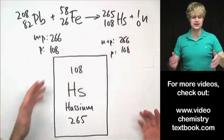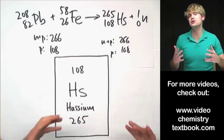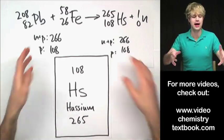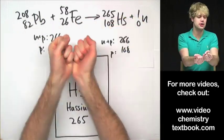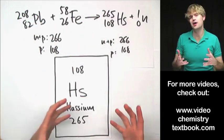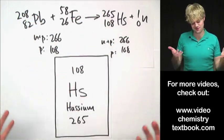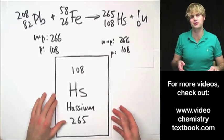You probably haven't heard of Hassium, and that's because it's a transuranium element. We don't see much of it because you've got to make it in the lab. You've got to make it by combining these two atoms.